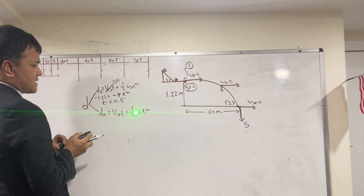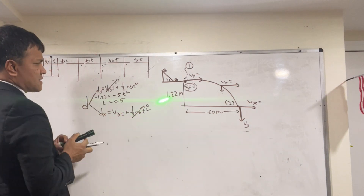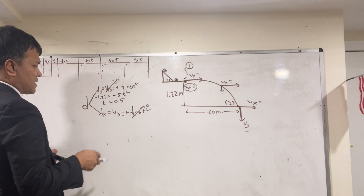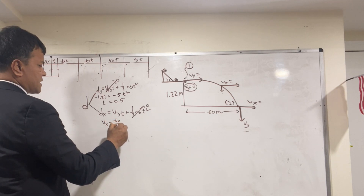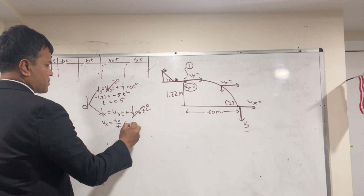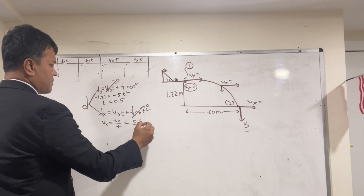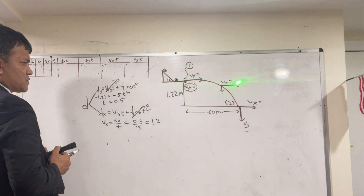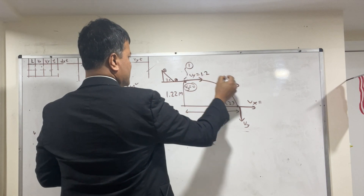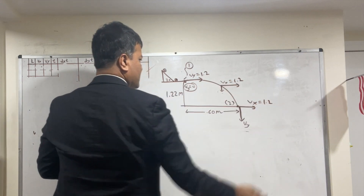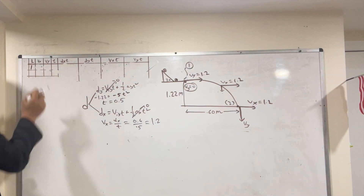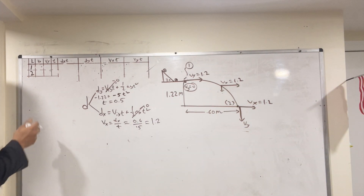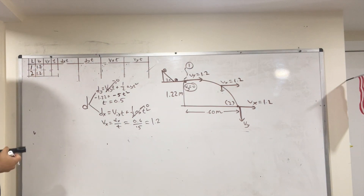In the x-direction, acceleration ax = 0, so vx remains constant. Using vx = dx / t, with dx = 0.60 m and t = 0.5 s, we get vx = 0.6 / 0.5 = 1.2 m/s. So vx = 1.2 m/s at location 1, and vx = 1.2 m/s at location 2 — it never changes. At location 1, vy = 0.